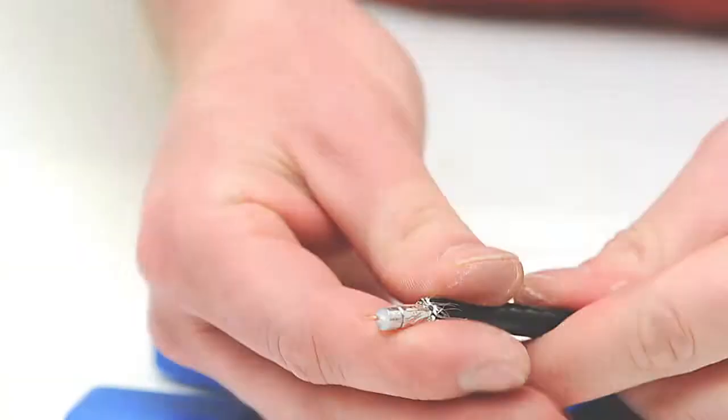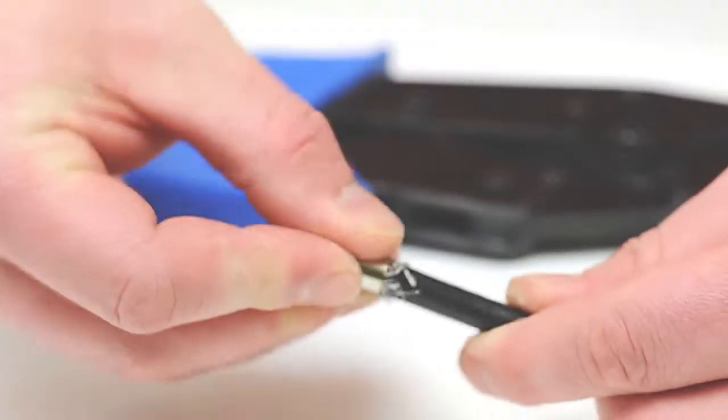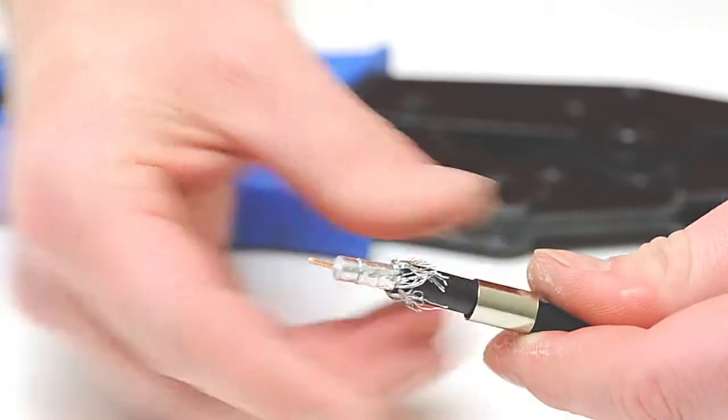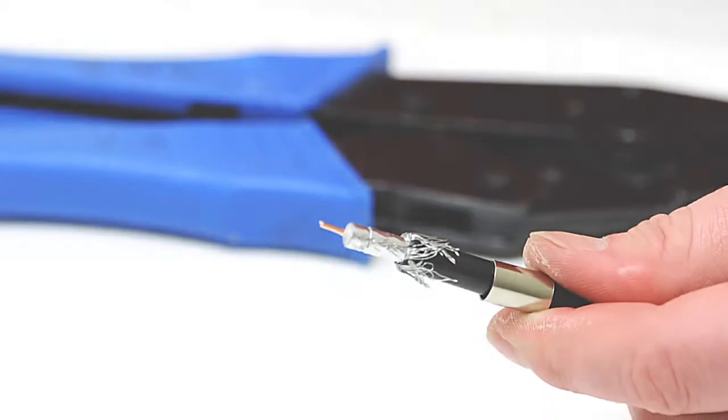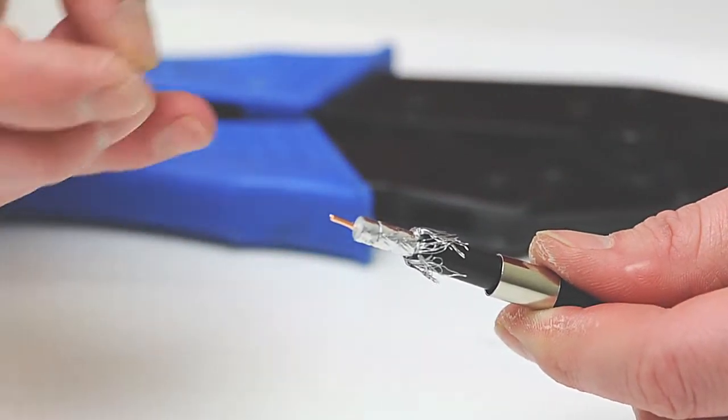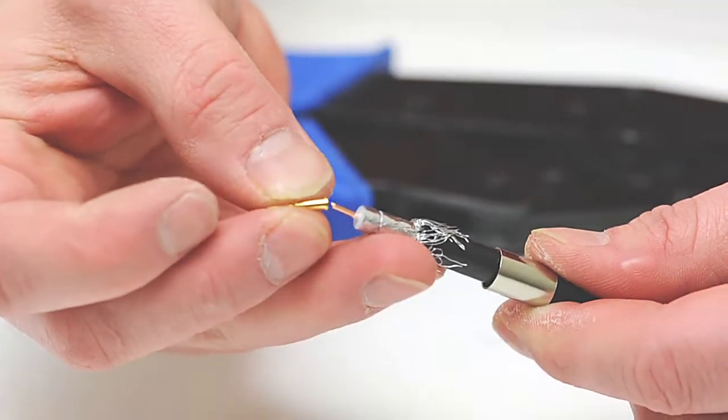Pull the braided shield on top of the jacket, slide the ferrule over the braid and the jacket. Insert the center pin of the center conductor.